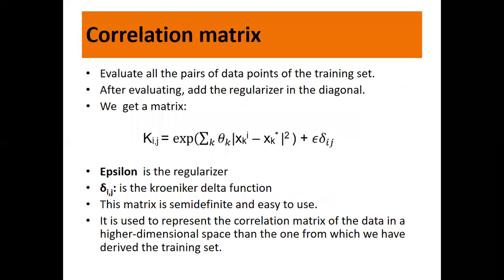Formation of the correlation matrix: we evaluate all pairs of data points of the training set. After evaluating, add the regularizers in the diagonal, and we get a matrix K_ij using this formula. Epsilon is the regularizer and delta_ij is the Kronecker delta. Kronecker delta is a function of two arguments i and j. If i equals j, then delta_ij equals 1; otherwise it equals 0. This matrix is semi-definite and easy to use, representing the correlation matrix in higher dimensional space.